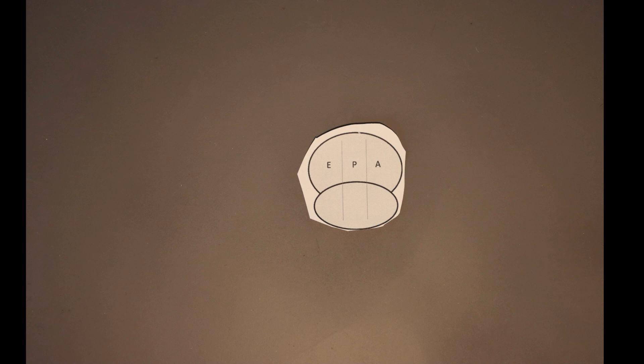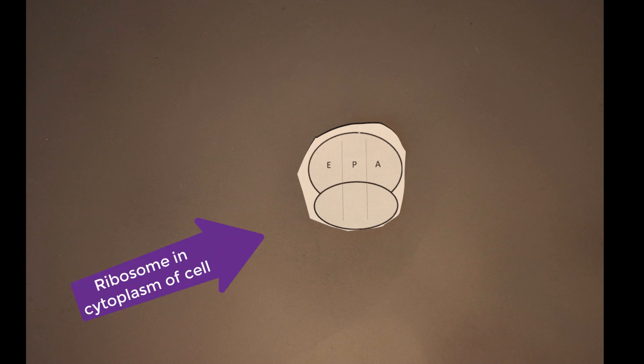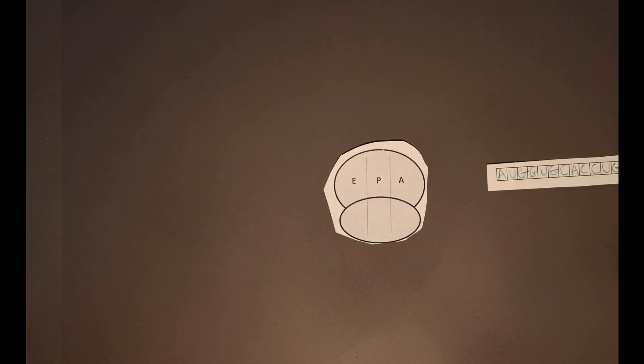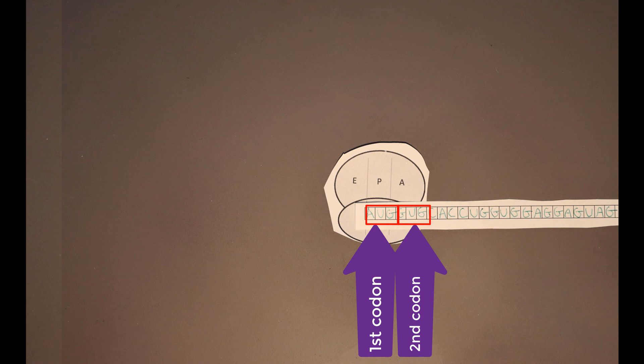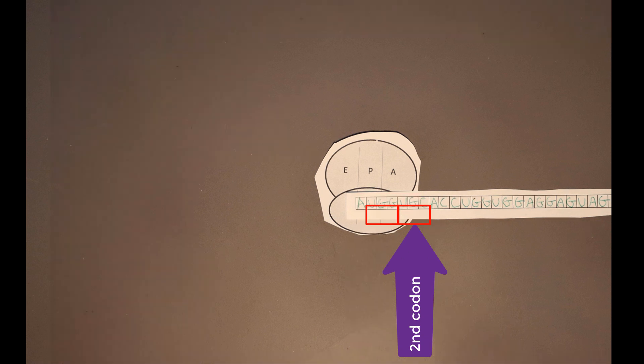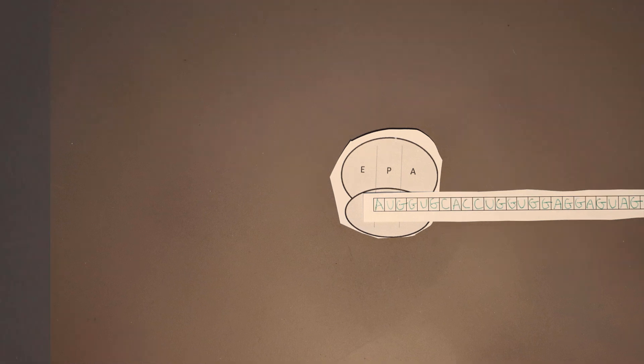After this is completed, you're ready for the process of translation, which occurs in the cytoplasm outside of the nucleus of the cell. Start by getting your ribosome, and then place your mRNA sequence such that the first two codons are located in the P and A site, respectively. Our large and small ribosome subunits are already connected in our example, so nothing needs to be done here at this point.